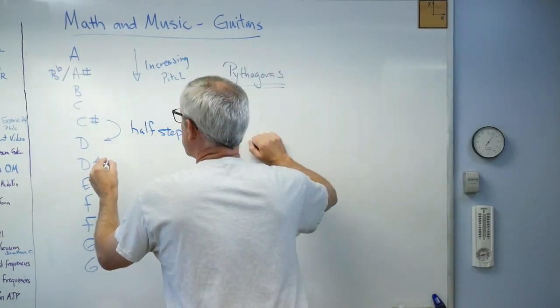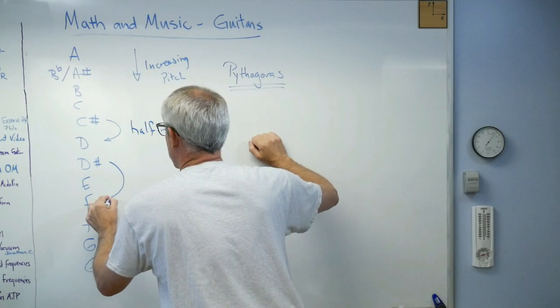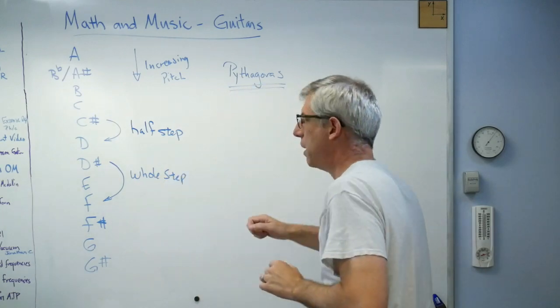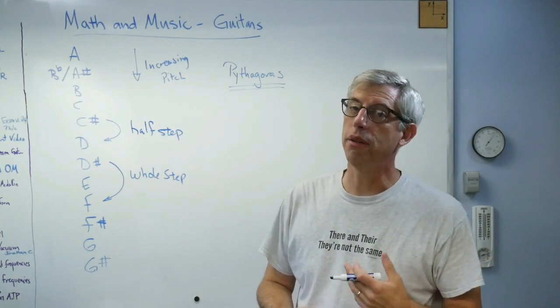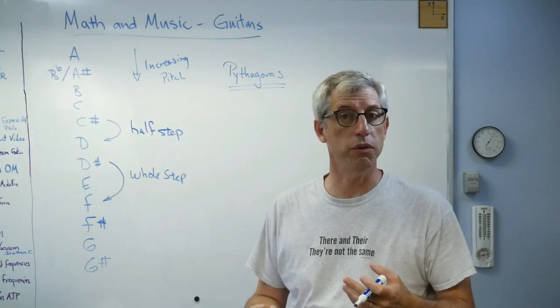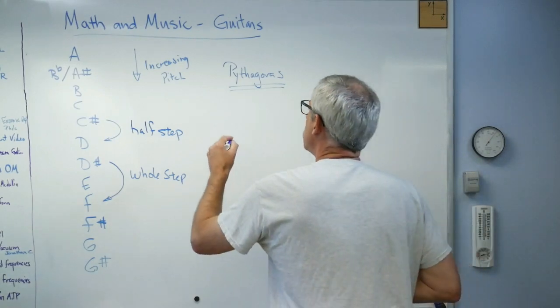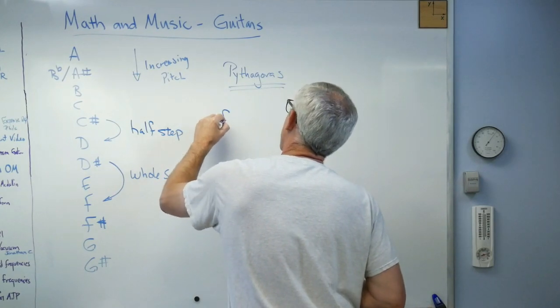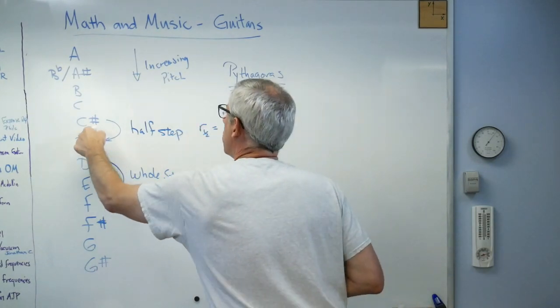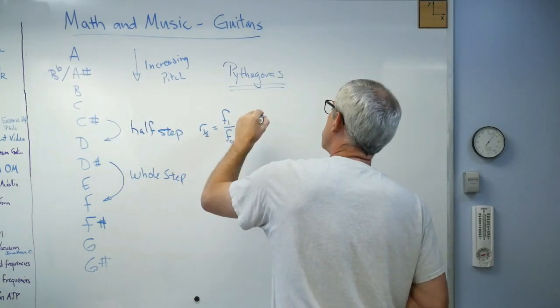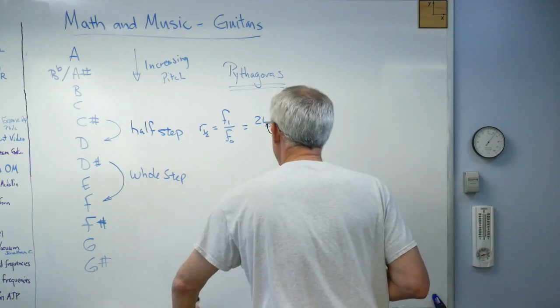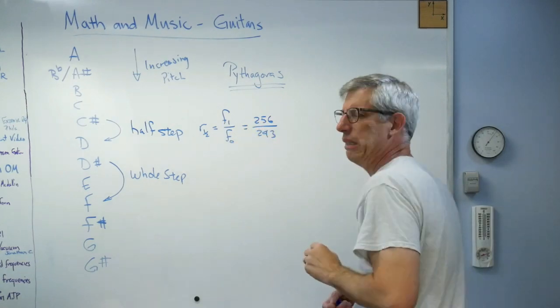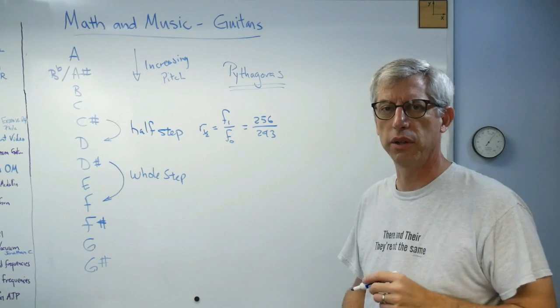And a whole step, it doesn't really matter which one I pick. I'll pick those two perhaps. That's a whole step. Half-step and whole-step. Once you know what a half-step and a whole-step is, in theory, you should be able to write down frequencies for any note you want. So if I say this ratio here, call it ratio one-half, and I'll call that F1 over F0. So Pythagoras decided that was going to be 256 over 243. Ugh, not the nicest ratio there, but there you have it.